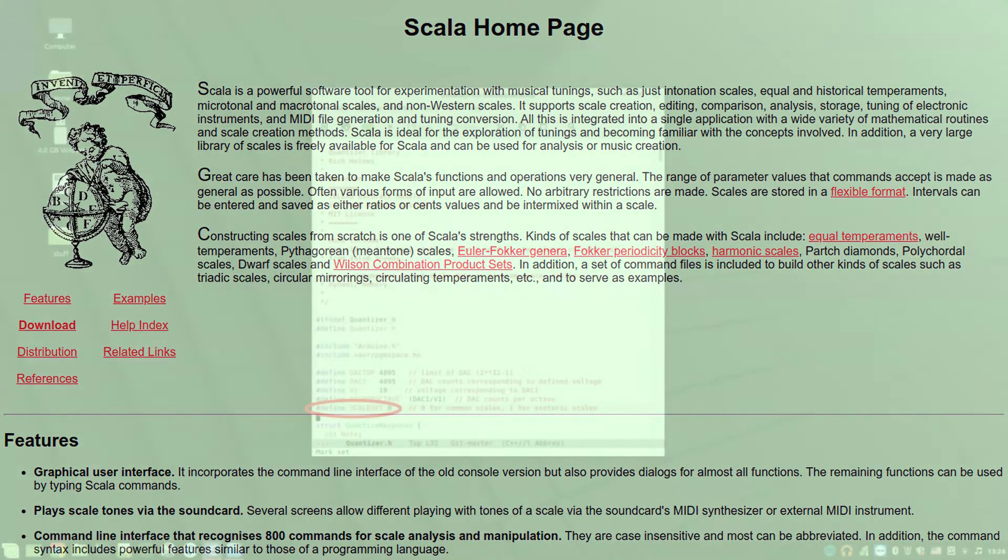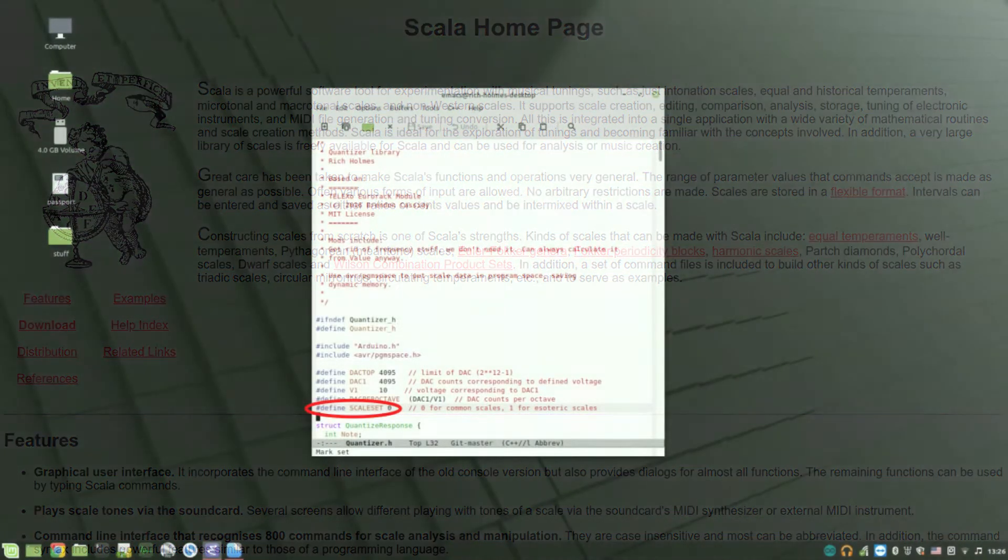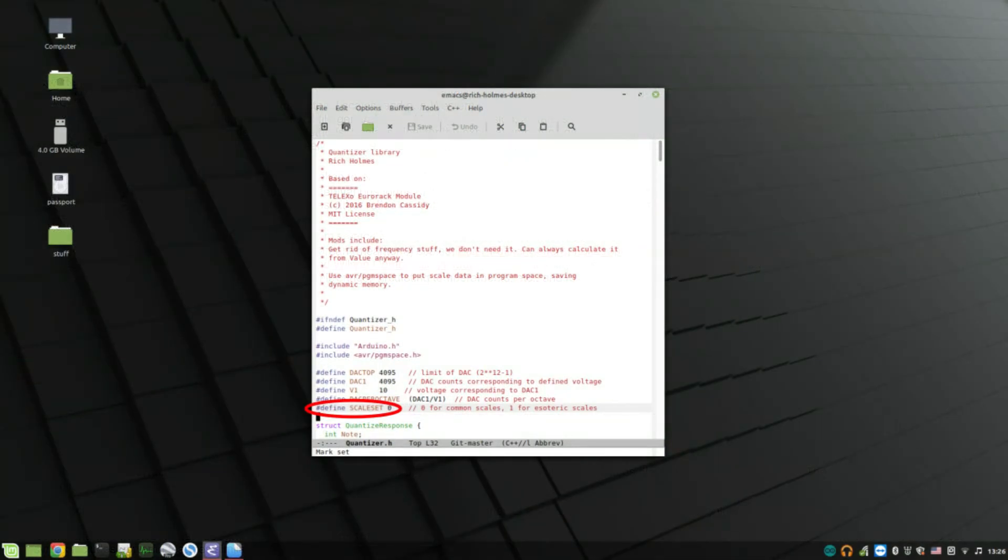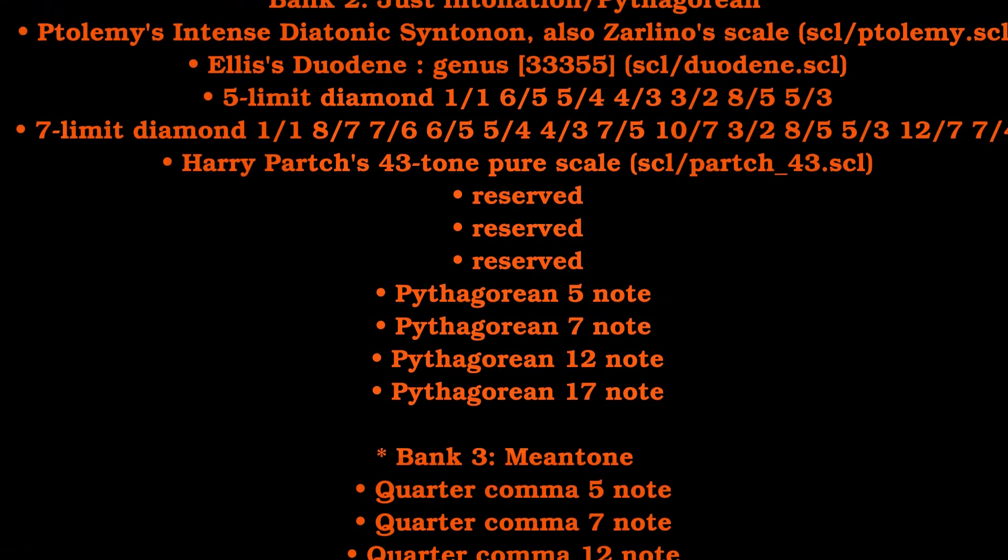So, maybe you want to do something with some of these more unusual esoteric scales. Fortunately for you, you can very easily change one line in the software for this quantizer, and that loads instead a different set of scales. The first bank is the same as what I just showed you.